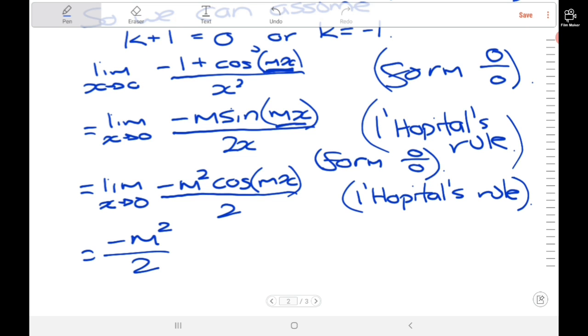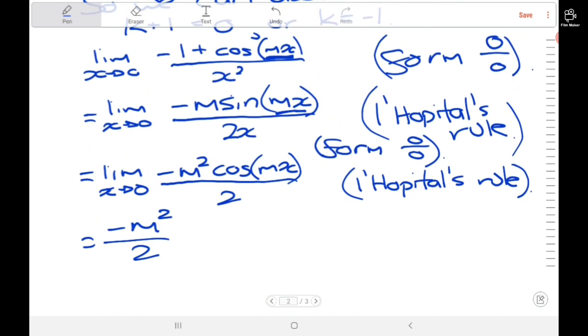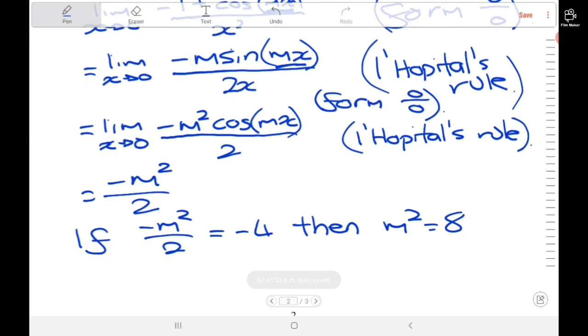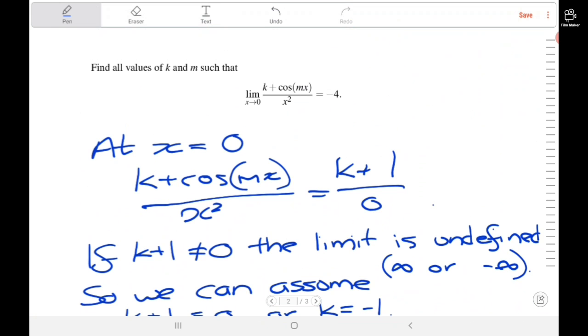Now we've evaluated the limit. For what values does this give negative 4? If negative m squared over 2 equals negative 4, then m squared equals 8 and m equals plus or minus root 8. In conclusion, k equals negative 1 and m equals plus or minus root 8 are the values that make this limit equal negative 4.